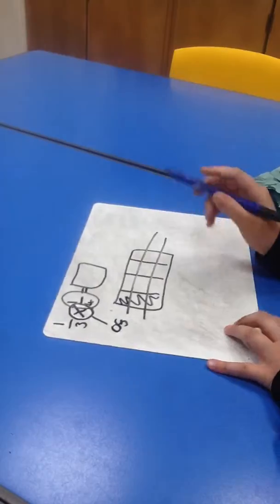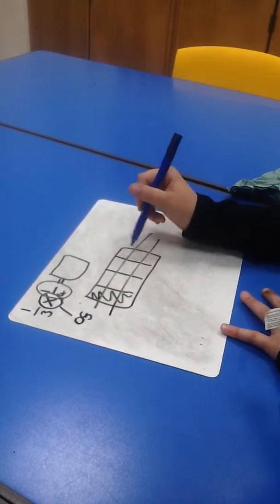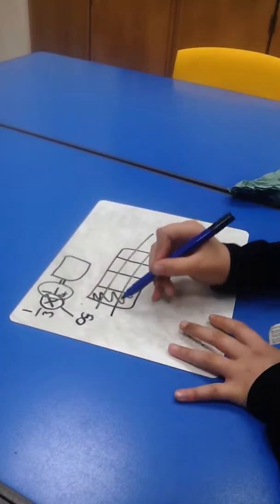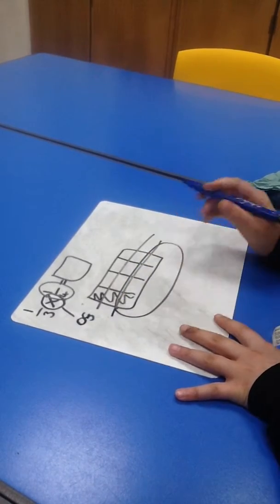Then you split it into thirds. It's easier to do it the other way. Now you have twelve pieces and you circle one column of it.